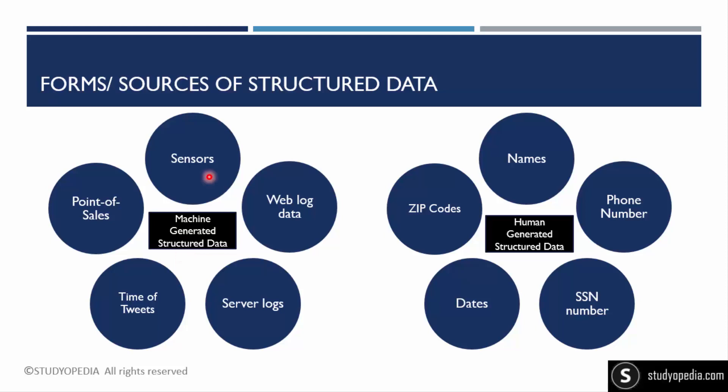For example, data from a smartwatch — heartbeat and SpO2 levels — gets saved in the form of structured data. Web log data is another example: if you have a website, that website generates logs.